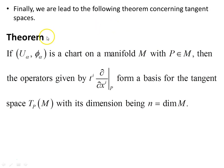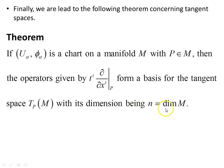Finally, we are led to the following theorem concerning tangent spaces, which was the outcome of the last video. If (U_alpha, phi_alpha) is a chart on a manifold M with p belonging to M, then the operators t^i d/dx_i at the point p form a basis for the tangent space T_p of M at the point p. The dimension is n, equal to the dimension of the manifold — whatever the dimension of the manifold is will be the dimension of the tangent space — and the basis is formed by these objects.